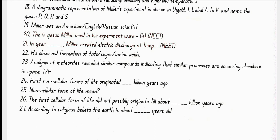Miller was an American scientist. The four gases Miller used in his experiments were methane, hydrogen, ammonia and H2O water. In year 1953, Miller created electric discharge at temperature 800 degree Celsius. He observed the formation of amino acids. Analysis of meteorites revealed similar compounds indicating that similar processes are occurring elsewhere in space. Yes, true.